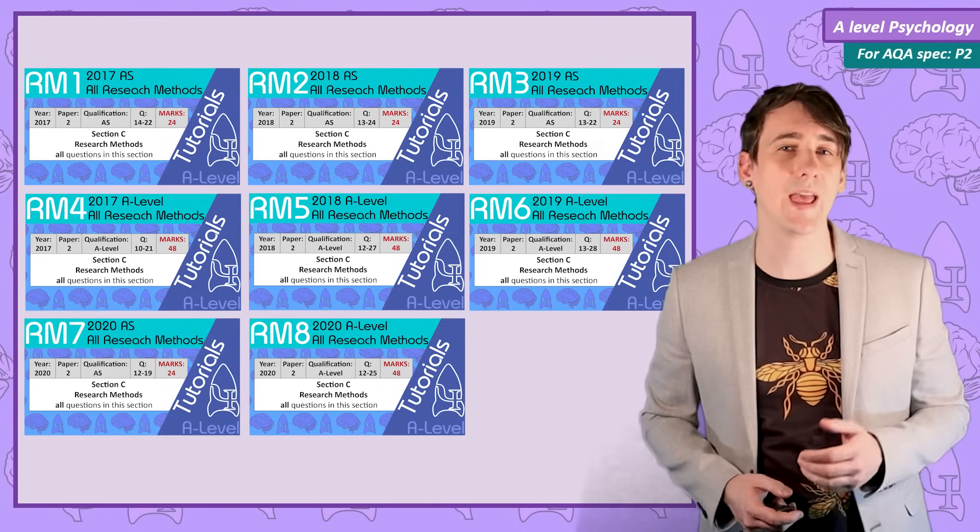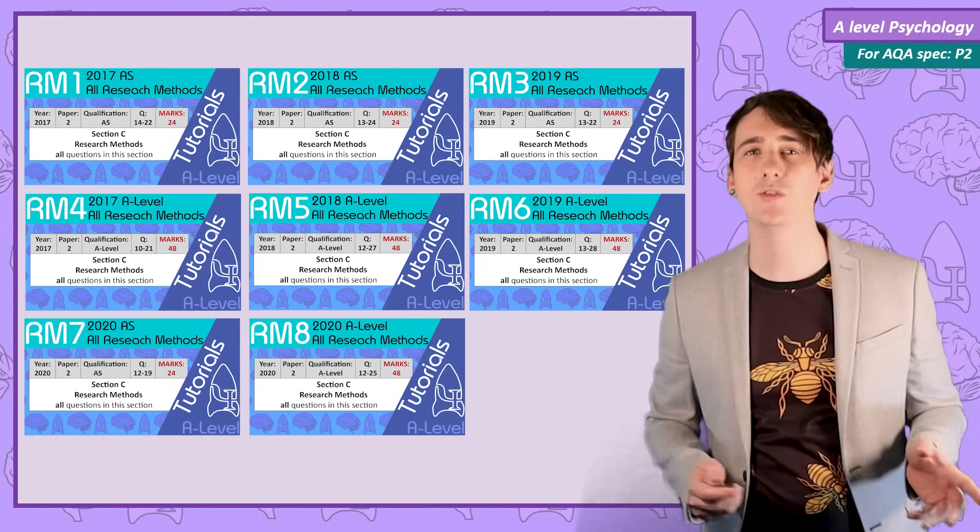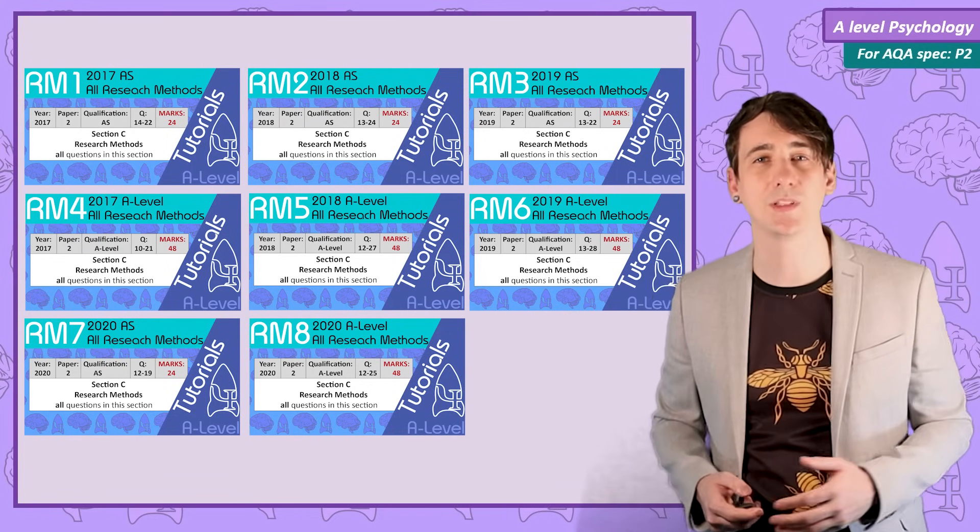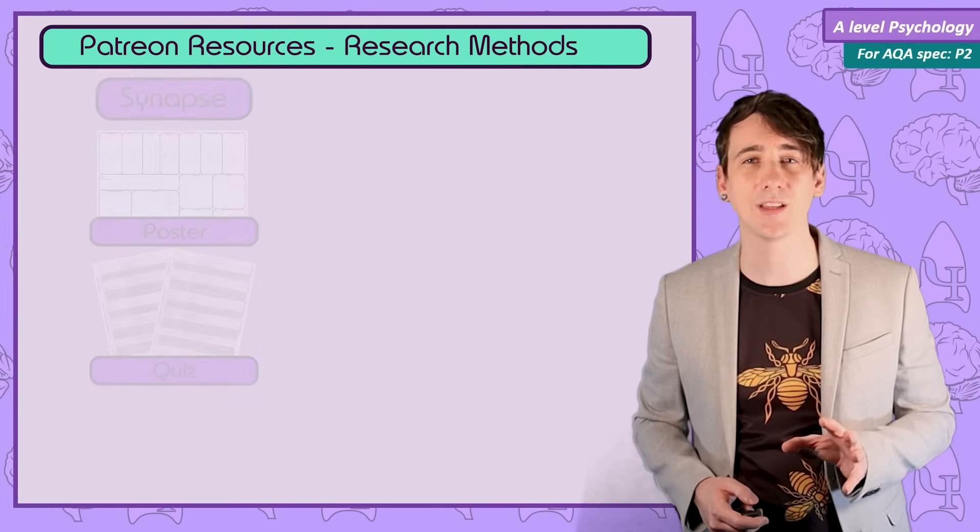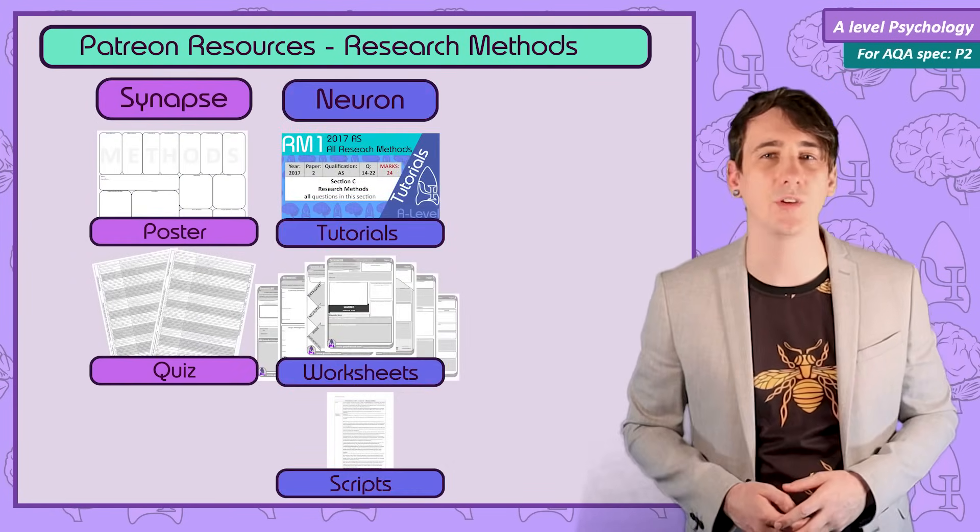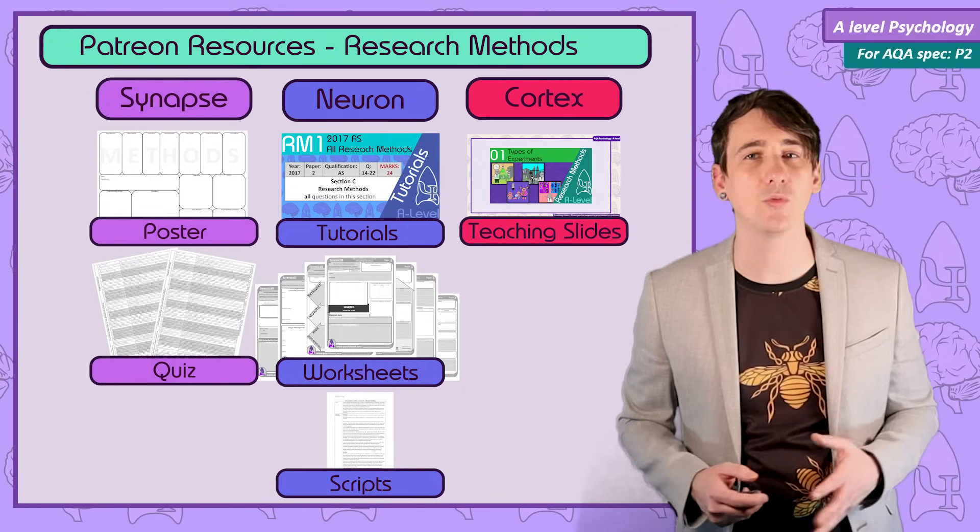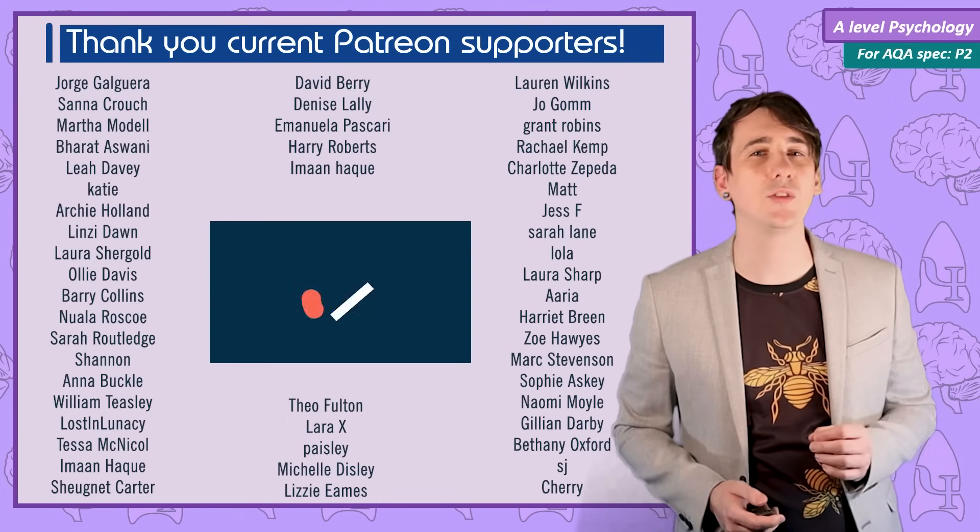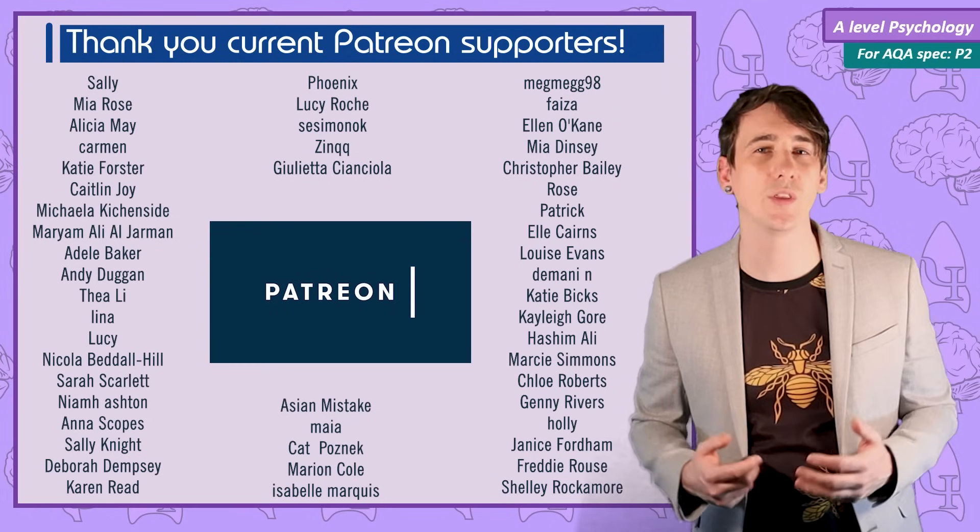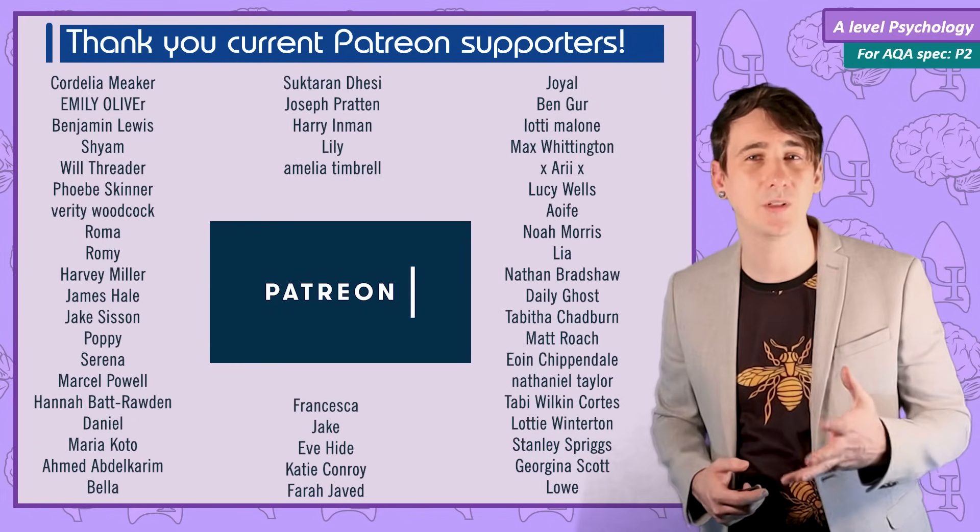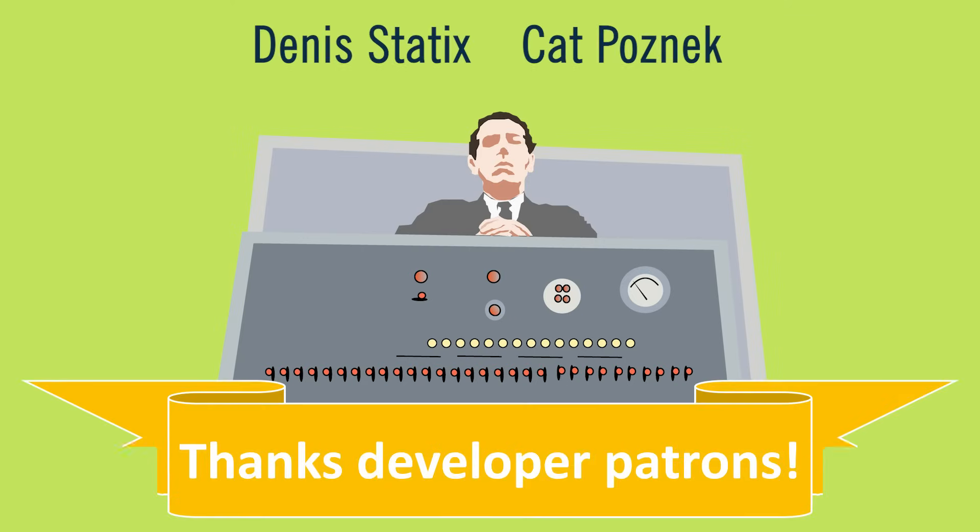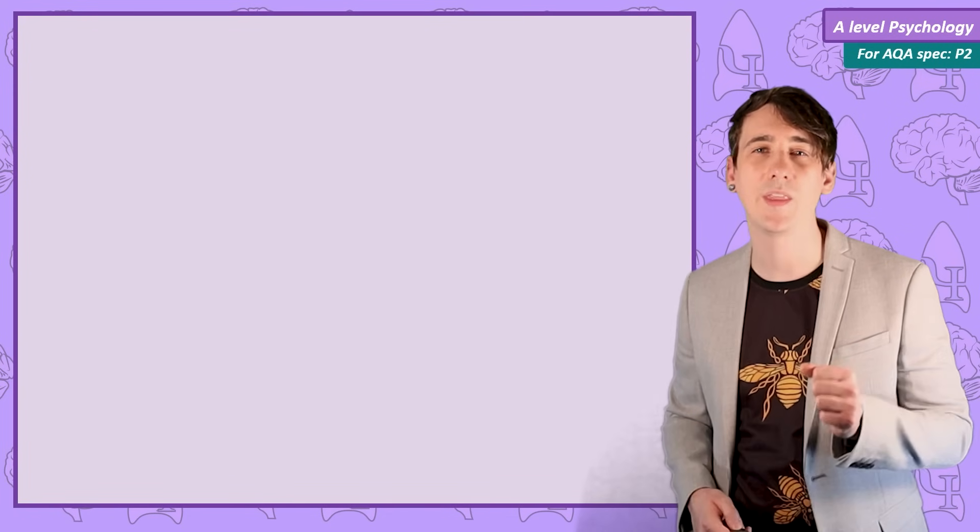I have 8 tutorial videos covering the AS and A level research methods sections from 2017 to 2020. These videos have worked examples to every question and are full of exam tips. Patrons at the Neuron level and above can access these and many many more hours of exam tutorial videos as well as over 100 printable resources from across the A level over on psychboost.com. I do want to thank all the students and teachers who have supported psychboost over on patreon during the development of the research methods unit. It's their support that allows me to teach part time so I can make psychboost on youtube for everyone. I also want to give a special shout out to the patrons who support me at the developer level. So thanks to them and I'll see you all in the next research methods video.